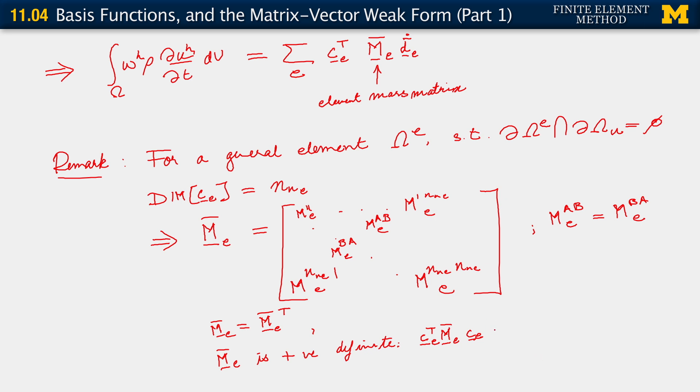And remember c_e can be arbitrary, right? It could be any vector. This is greater than or equal to 0 for all c_e being in n dimensional vectors. Right?